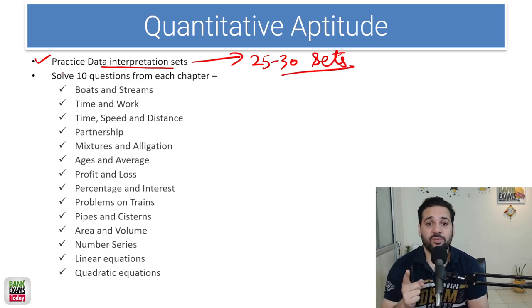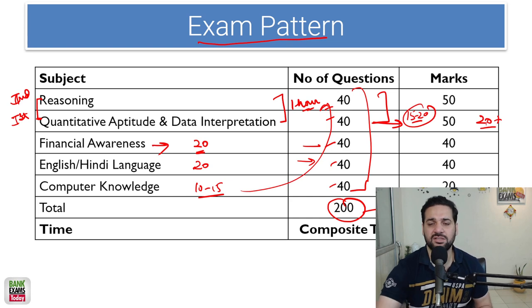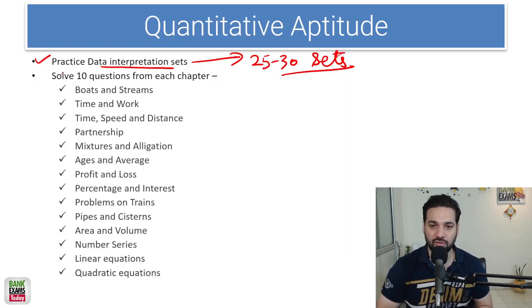That is the first thing that you should do if you are doing your preparation. Exam mein kaafi zyada weightage hai. There are 50 marks aur 40 questions. Out of 40 questions I tell you that 15 to 20 questions directly aur 20 plus marks, 22 marks directly from data interpretation only. So there is a lot of weightage to the data interpretation and it is actually easy.